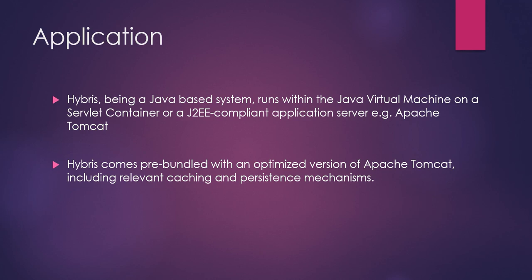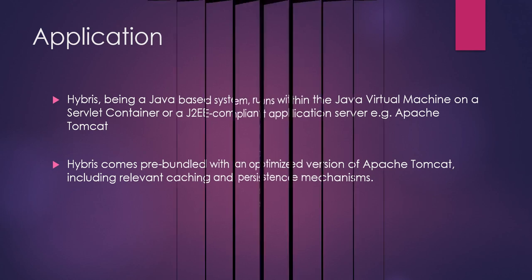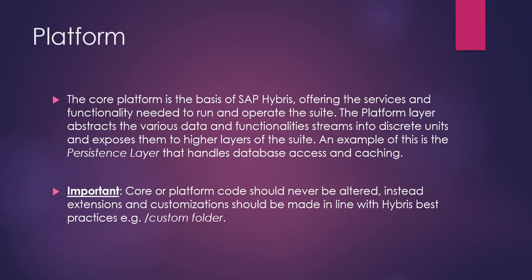The next and arguably most important element is the platform. This is the core of SAP Hybris, offering the services and functionality needed to run and operate the suite. The platform layer abstracts the various data and functionality streams into discrete units and exposes them to higher layers of the suite. An example of this is the persistence layer that handles database access and caching. It is important to note that core or platform code should never be altered — instead, extensions and customizations should be made in line with Hybris best practices, for example in the slash custom folder.